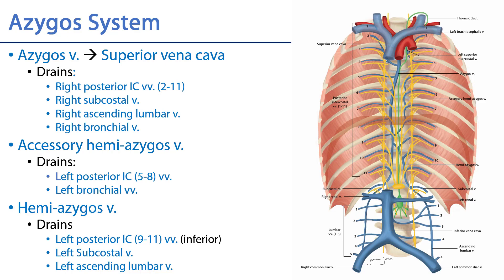Let's look at more granular detail. Going into the azygous vein tributary-wise, beginning on the right: intercostal spaces 2, 3, and 4 are going to be drained via a common trunk — the right superior intercostal vein. Then intercostal spaces 5 through 11, as well as the subcostal vein and the right ascending lumbar vein, will all drain into the azygous vein.